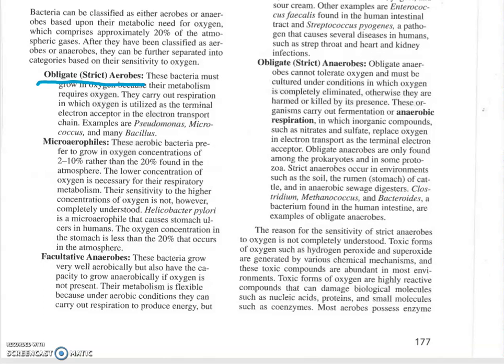Microaerophiles. These bacteria prefer oxygen concentrations that are below what we normally find in the atmosphere. Microaerophiles, they like somewhere between 2 to 10% oxygen rather than the 20% that we have in our atmosphere.